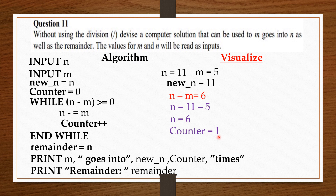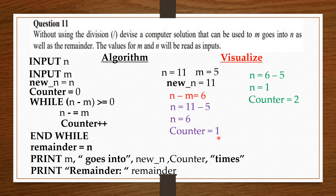The condition to enter the while loop is that n minus m is greater than or equal to 0. Since n is 6, 6 minus 5 is 1, which is greater than 0. We can enter the while loop and run the block of code for the second time. Inside the loop, n minus equals m. So, n, which is now 6, gives us n equals 6 minus 5, which gives us 1. Then, counter plus plus. Remember, counter was 1 from the first loop. So, 1 plus 1 gives counter to be 2. End while. After running the loop for the second time, n equals 1 and counter is 2.